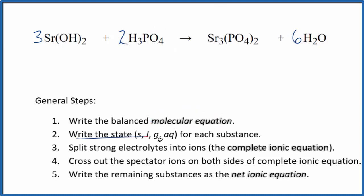Now we can write the state for each substance. Strontium hydroxide is considered a strong base. We're going to say that that's aqueous. Phosphoric acid is a weak acid, so it's a weak electrolyte. It'll still dissolve and be aqueous, but since it's a weak electrolyte, we won't split it apart into its ions.